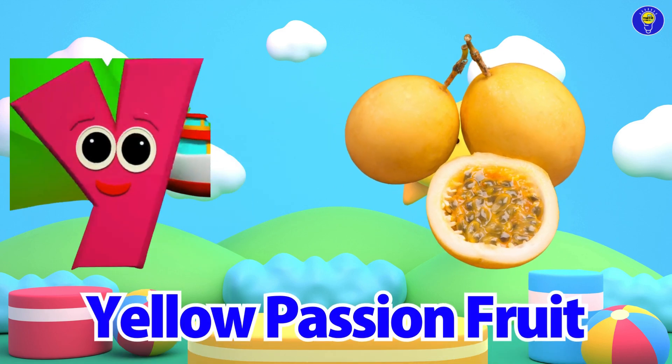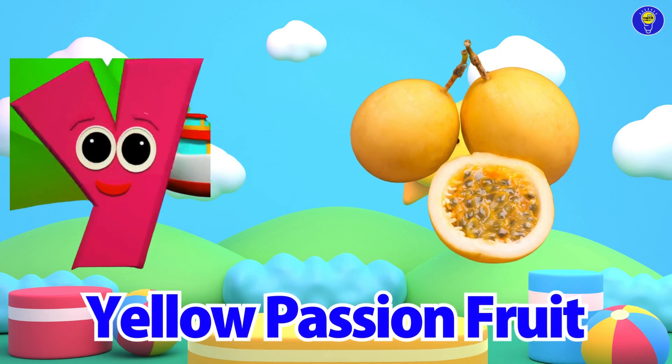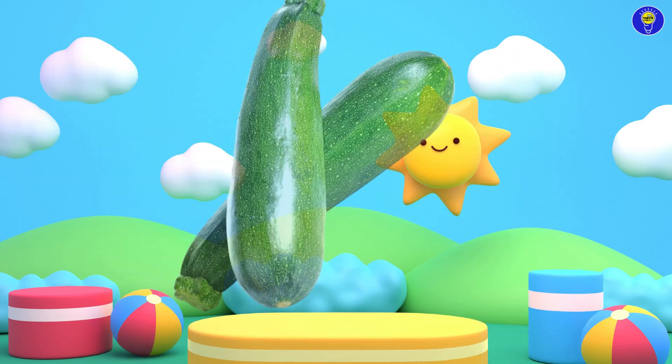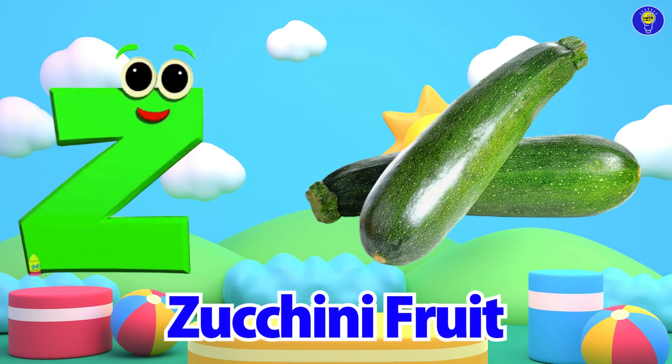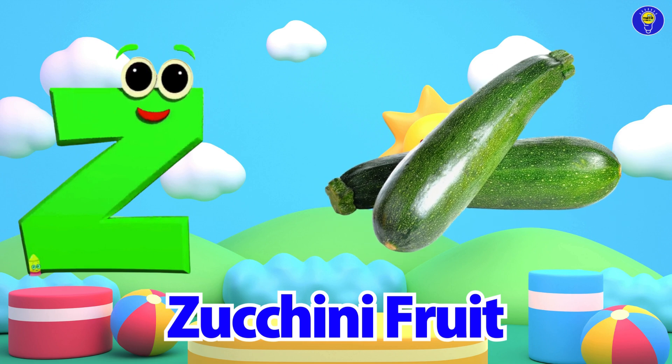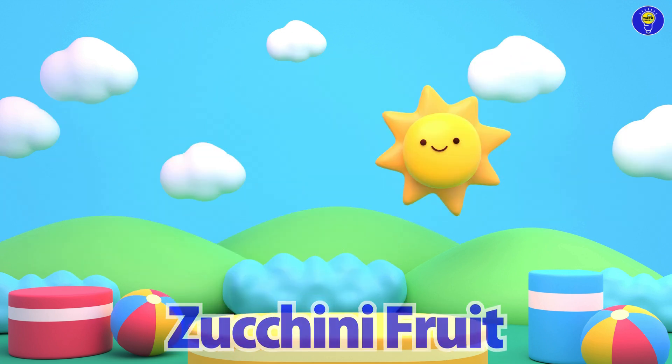Y is for yellow passion fruit. Ya, yellow passion fruit. Z is for zucchini fruit. Zh, zucchini fruit.